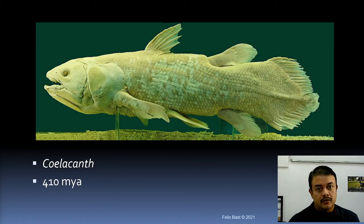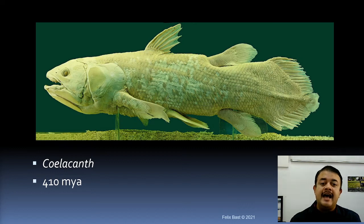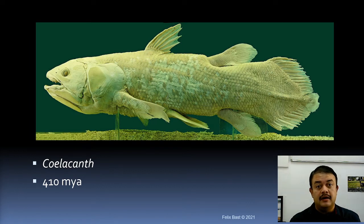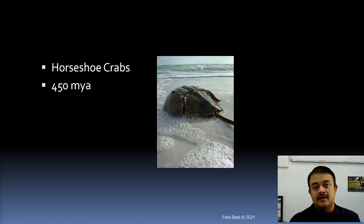Another very interesting living fossil is the coelacanth, found in Africa. This deep-sea fish is at least 410 million years old. It has survived many mass extinction events — including the Permian extinction, known as 'the great death,' and the K-T extinction event. Every single major extinction event, this fish has survived, and it is still living today.